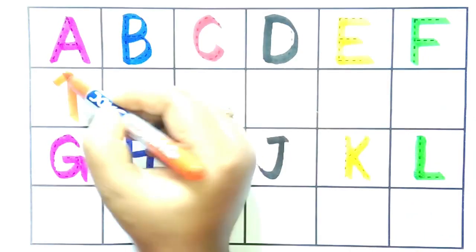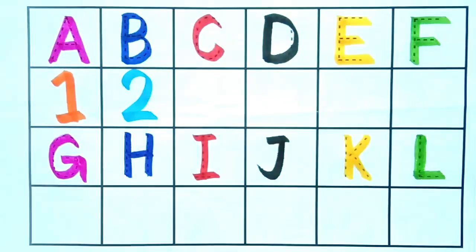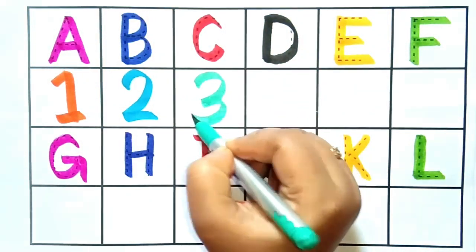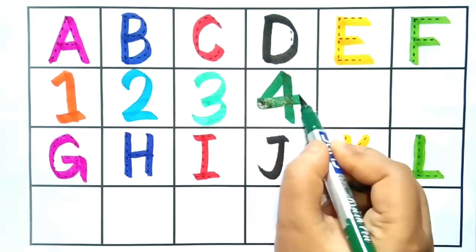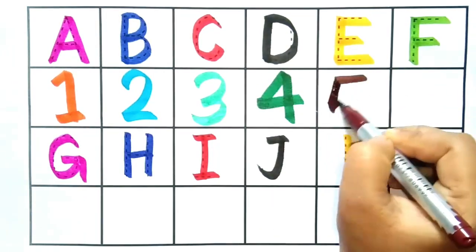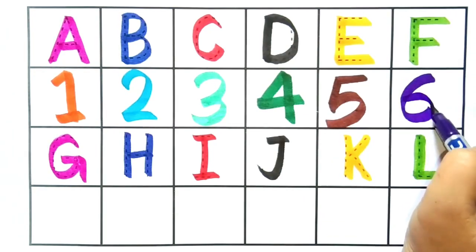One, it is number one. Two, it is number two. Three, it is number three. Four, it is number four. Five, it is number five. Six, it is number six.